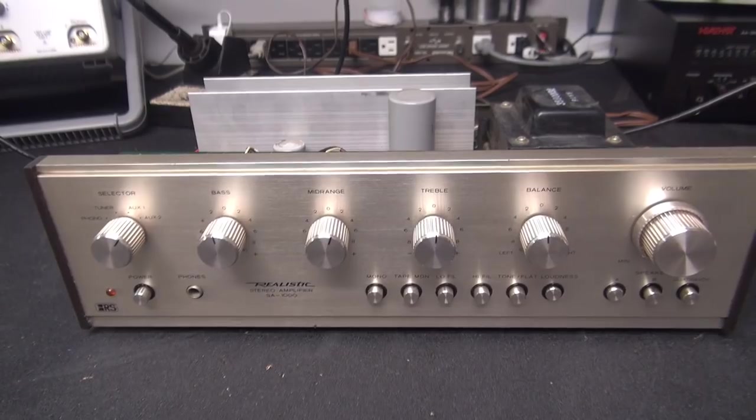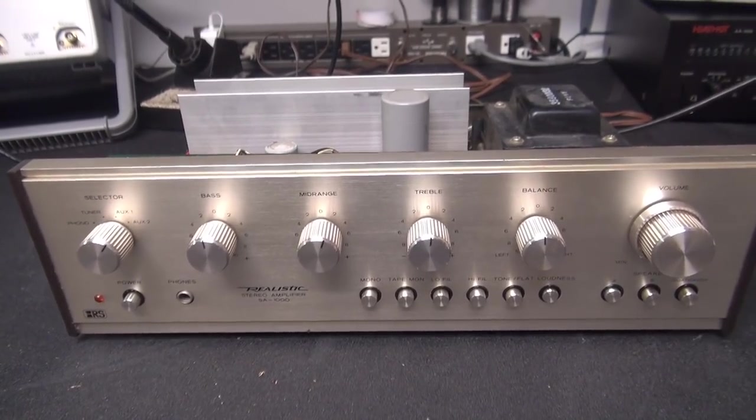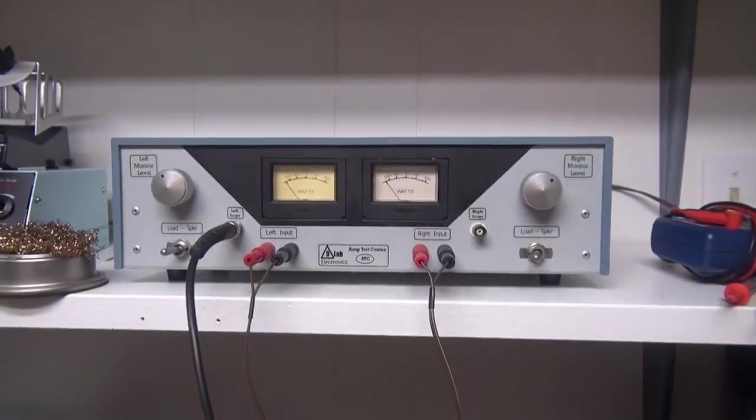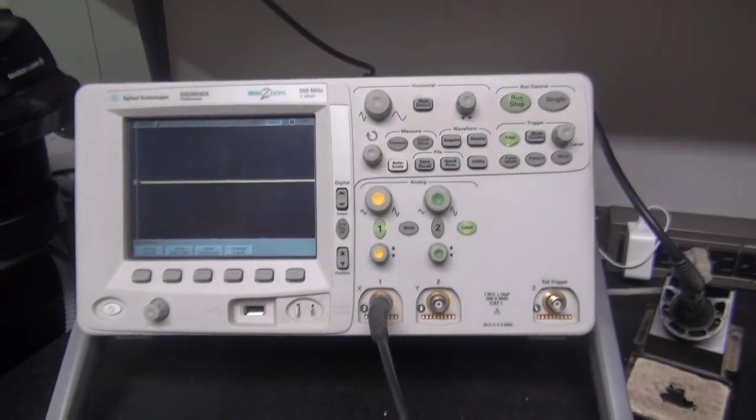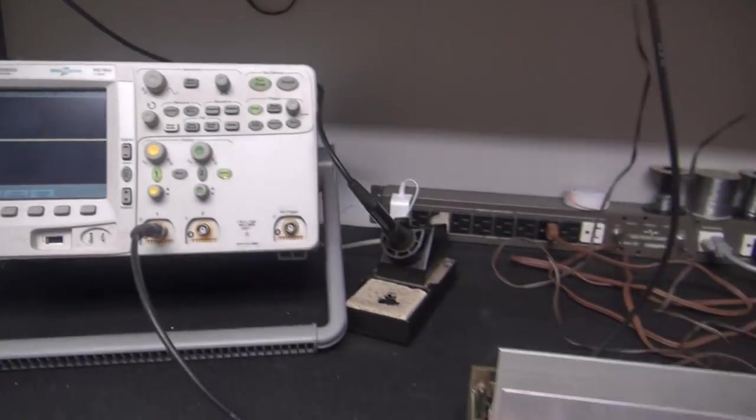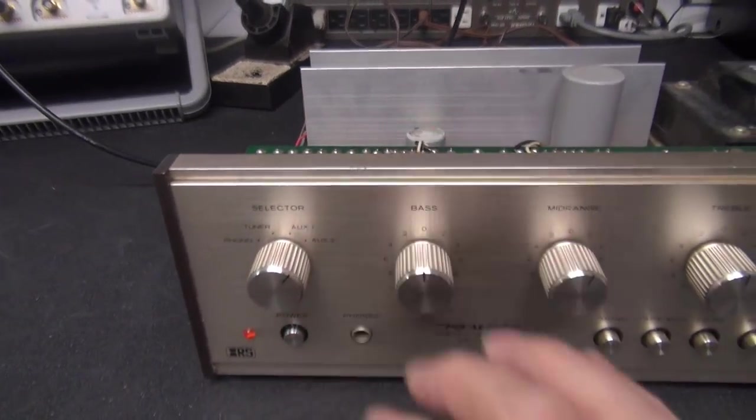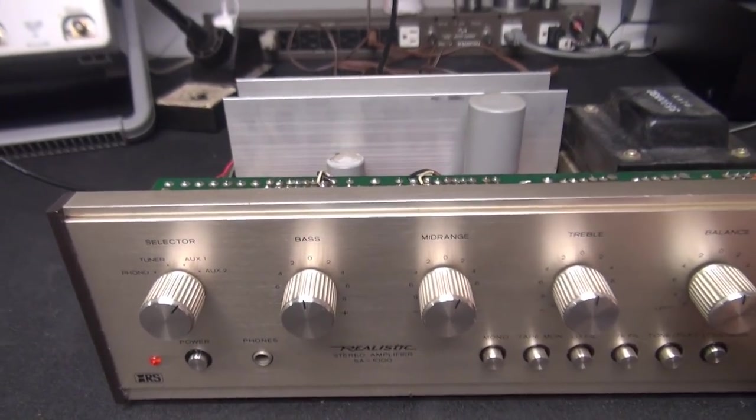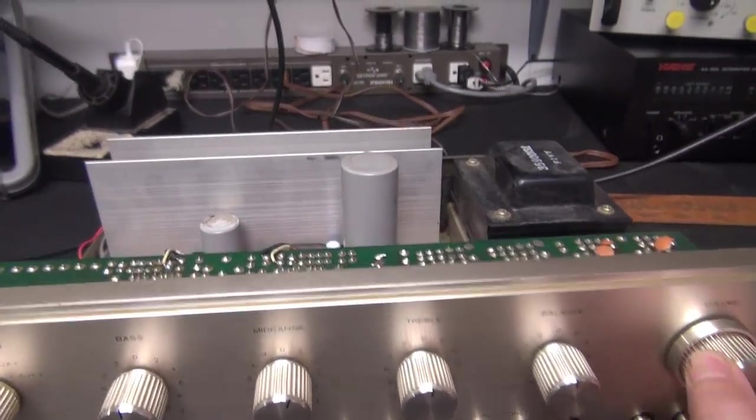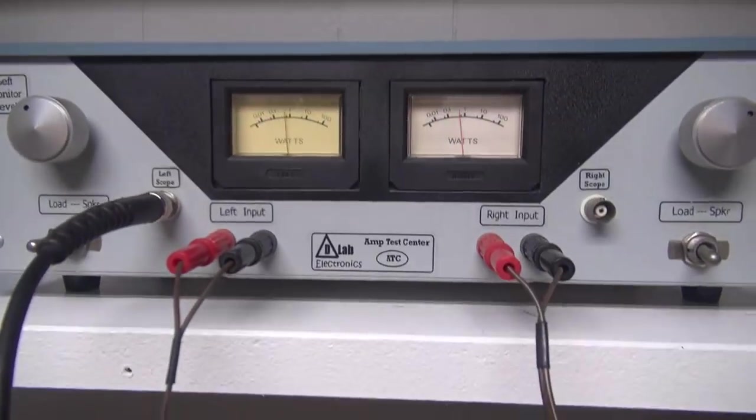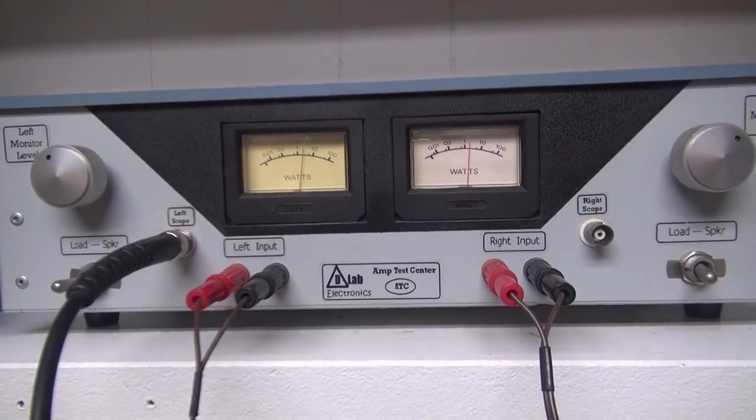Let's give the realistic SA-1000 a little test into the D-Lab stereo audio test set. I'm going to monitor it with the Agilent scope. So we'll flip around, give it a second for everything to warm up. I'm going to bring up the volume. Let's take a look at the wattmeters. You see we have output on both channels.